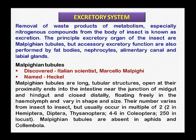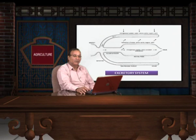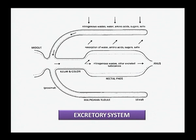The number of Malpighian tubules varies from insect to insect but they are present in multiples of two. For example, in Hemiptera the number is two, in Thysanoptera (thrips) they are also two in number, but in Coleoptera the number is four to six. In aphids and Collembola, the Malpighian tubules are completely absent. These tubules help in the excretion of nitrogenous waste products, amino acids, sugars, and salts.